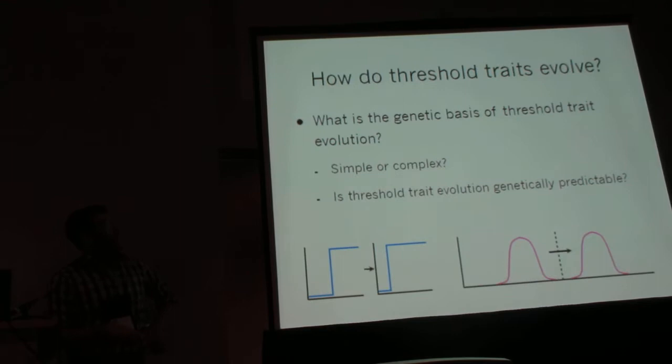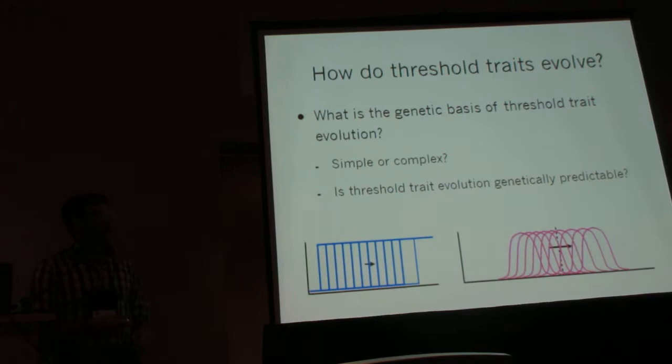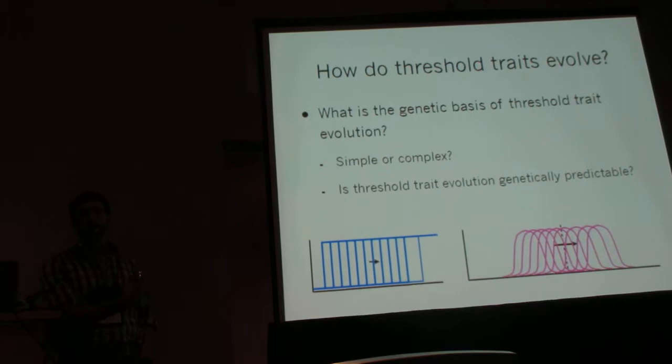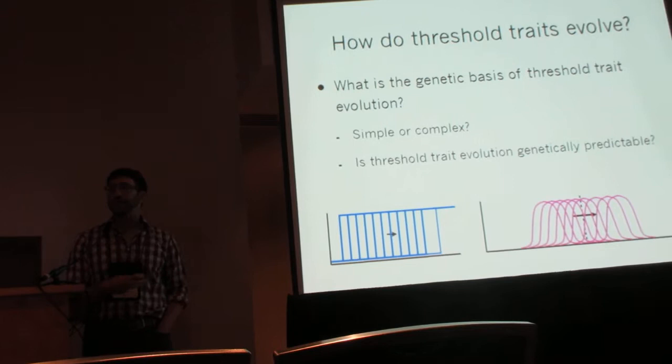The genetics of how changes in thresholds evolve hasn't received a great deal of study. A few studies have looked at whether a few changes of major effect or many changes of small effect at the genetic level are responsible for shifts in threshold traits. Similarly, when we see threshold traits evolving in similar ways multiple times independently, a few studies have asked whether that occurs between similar or unique sets of genetic loci.